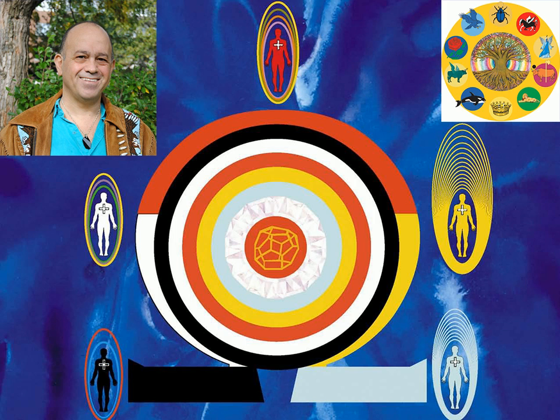Once you have completed connecting and activating the four spirals within the alchemical body, you have to do the same to connect and to activate the four spirals within the alchemical soul and the four spirals within the alchemical spirit.